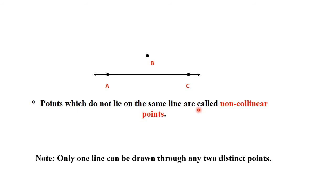Note: only one line can be drawn through any two distinct points. If we have two points like point A and point C, then we can draw only one line using these two points.